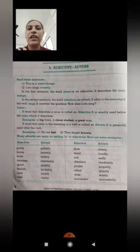How does Lata sing? Lata कैसे गाती है? So, sweetly. A word that describes a noun is called an adjective. It is usually used before the noun which is described. यहाँ adjective किसे कहेंगे जहाँ पे noun का पुरा describe करना है और वो noun से पहले लिखा जाता है.